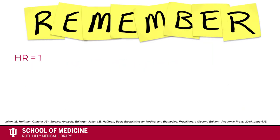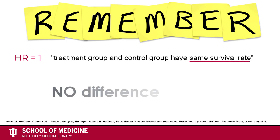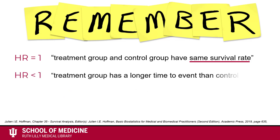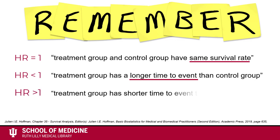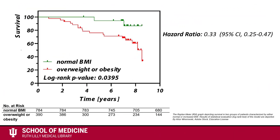Remember, if the hazard ratio equals 1, the treatment group and the control group have the same survival rate and there is no difference. If the hazard ratio is less than 1, the treatment group has a longer time to event than the control group. And if the hazard ratio is greater than 1, the treatment group has a shorter time to event than the control group.